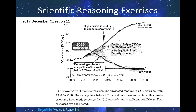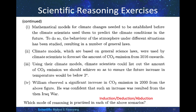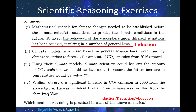December 2017. The figure shows the recorded and projected amount of CO2 emissions from 1980 to 2100. The data points before 2016 are direct measurements, while a climate scientist has made forecasts for 2016 onwards under different conditions — four scenarios are considered. For scenario one: mathematical models for climate change are established before climate scientists use them to predict future climate conditions. The behavior of the atmosphere under different situations has been studied, resulting in a number of general laws. Climate scientists collect the data and then make generalizations — therefore, this is induction.